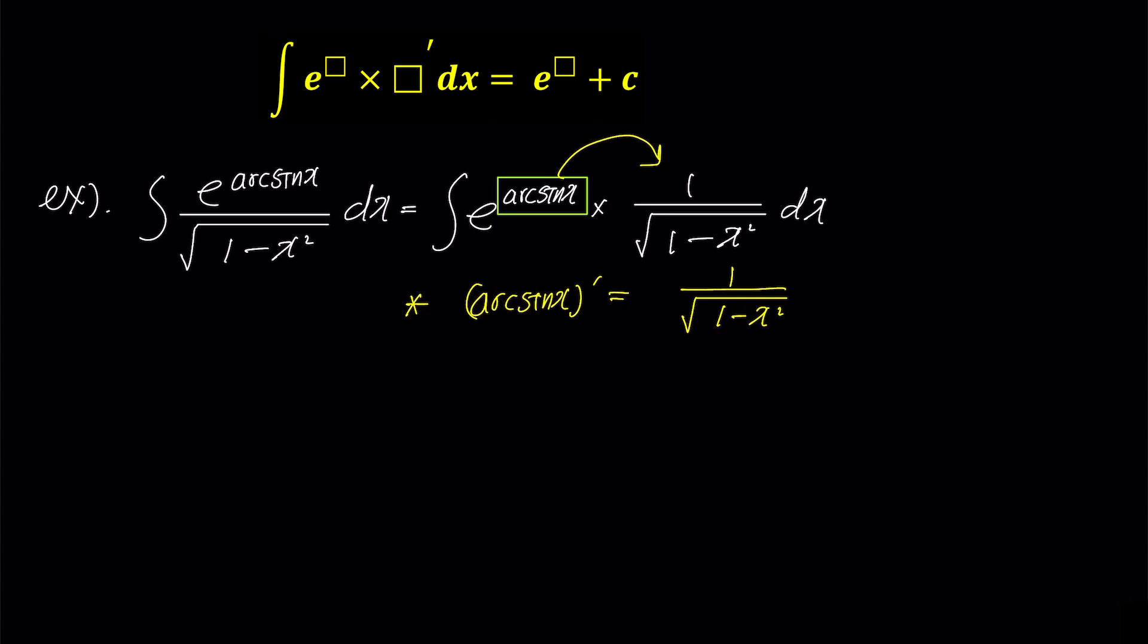Now, back to the problem. We simply put arcsine x in the green box and 1 over square root 1 minus x squared in the box prime to complete the left-hand side. Then, we just need to put arcsine x in the green box of the right answer.